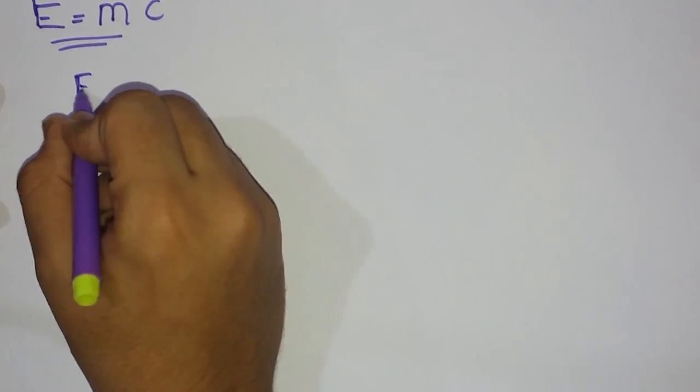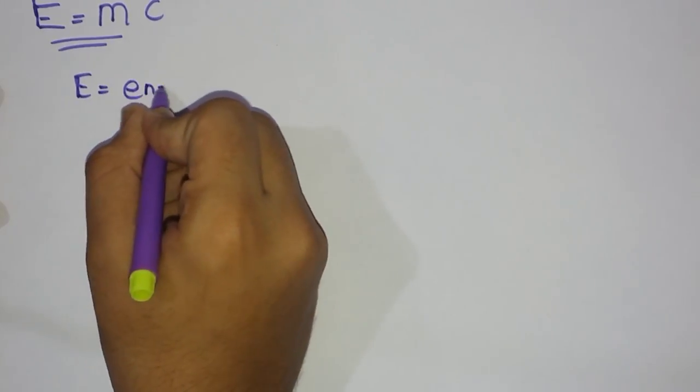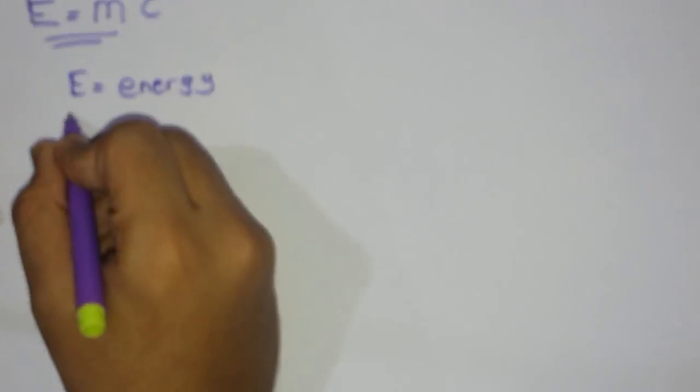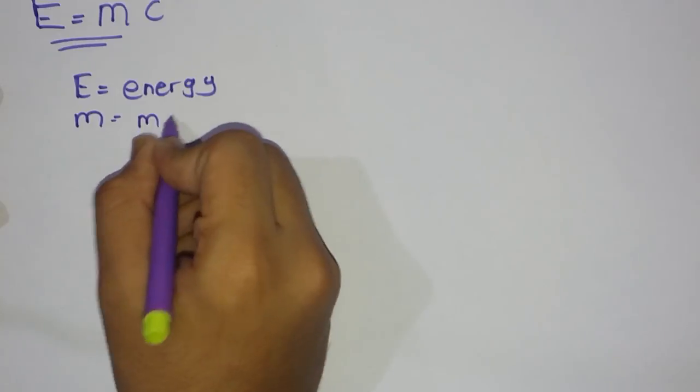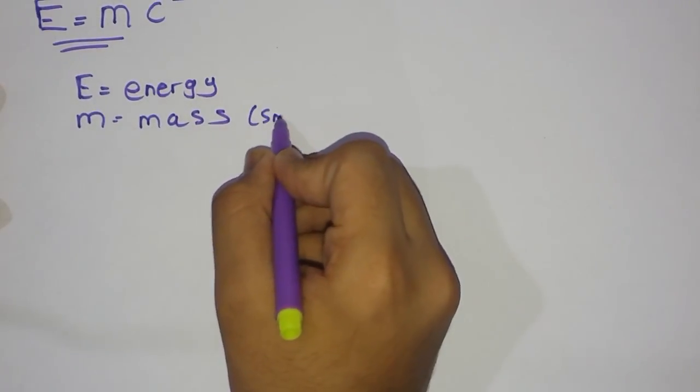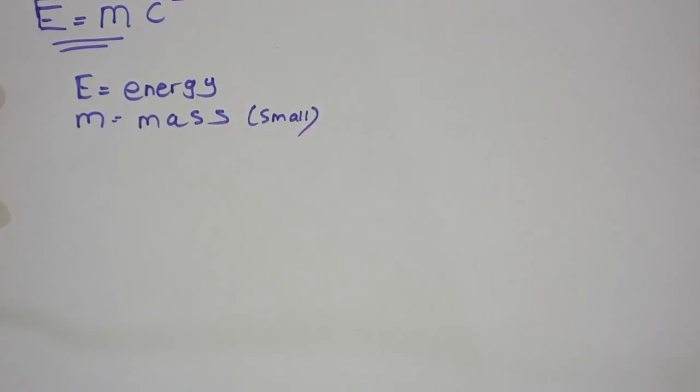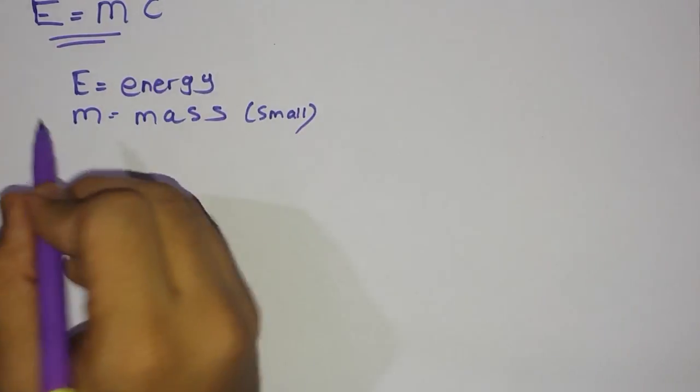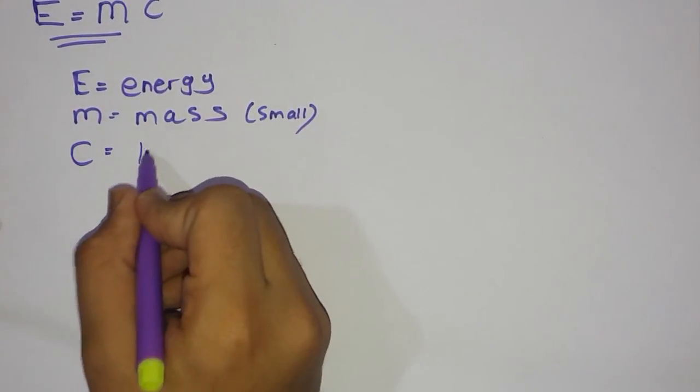Let me give you the first parameters. E is the energy, M is mass, or we can say small mass because the particles have very small mass, and C is light speed.